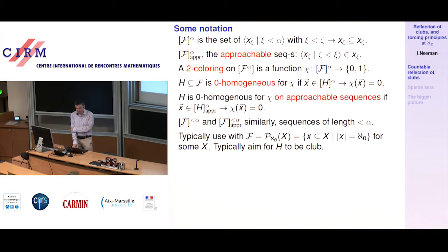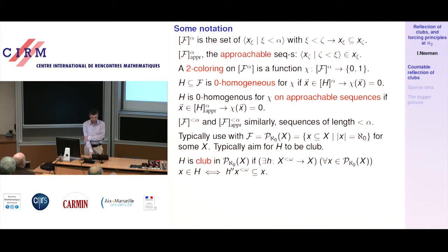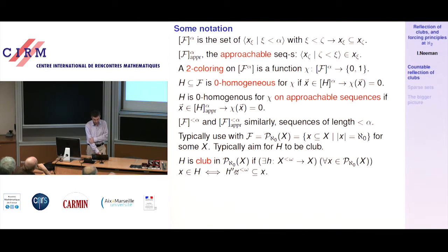I'm going to look for an h that's a club when talking about homogeneous or 0-homogeneous sets. H is club in the collection of countable subsets of X if there is some function little h so that the elements of H are exactly the countable sets which are closed under little h. That is, X is in the club H if and only if when you apply h to all tuples from X, you stay inside X — X is closed under this function.